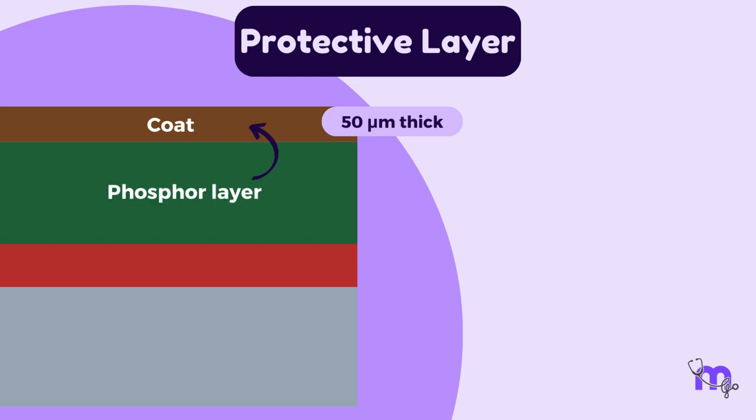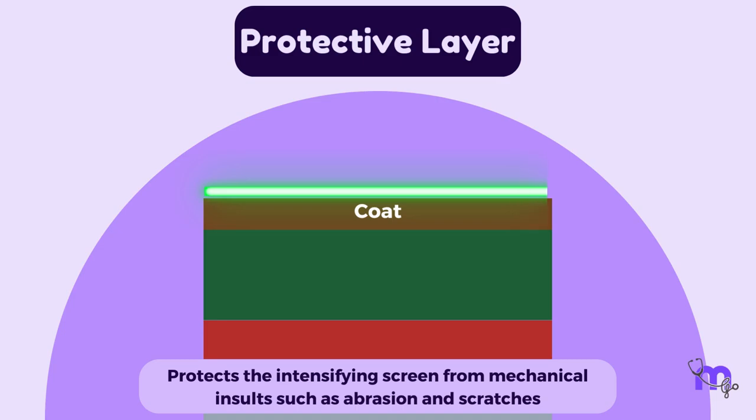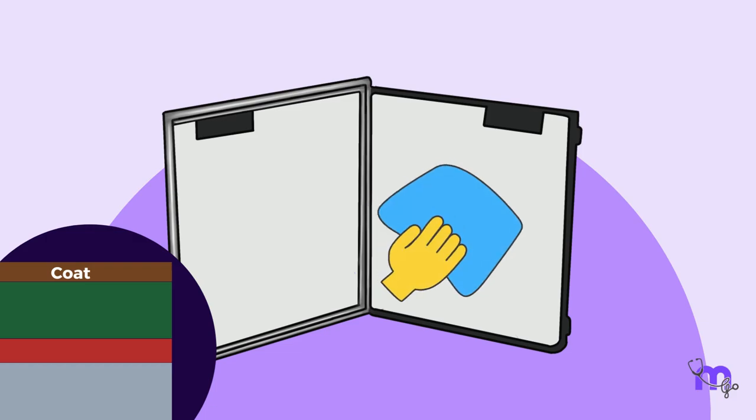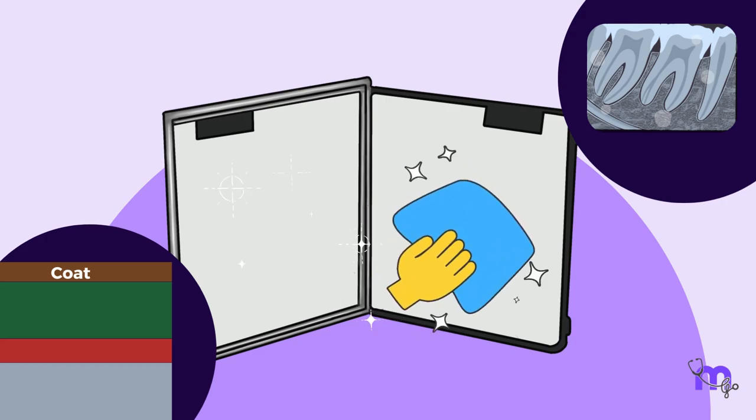The final layer is the protective coat of 50 micrometer thickness. It is placed over the phosphor layer. As the name suggests, it protects the intensifying screen from mechanical insults, such as abrasion and scratches. It is important to regularly clean the screen as debris can cause white spots on the image. Fortunately, the protective layer makes cleaning easy.